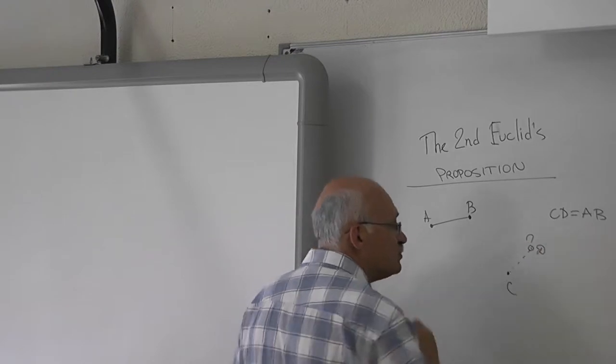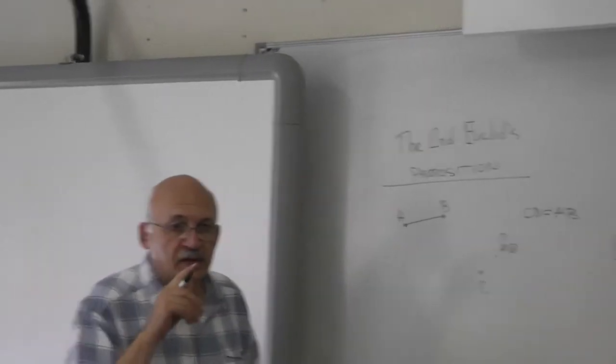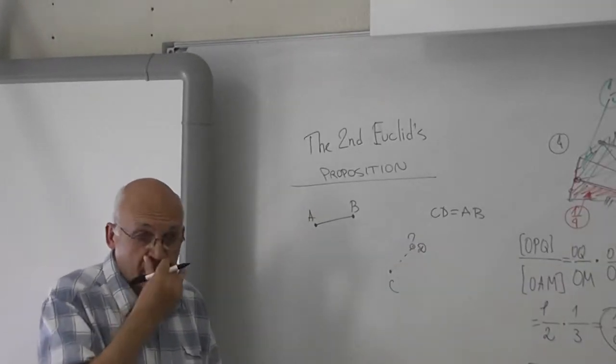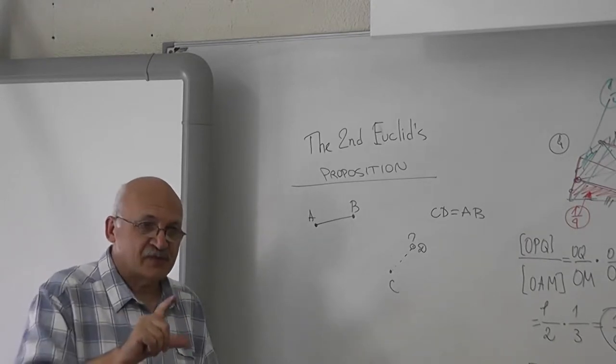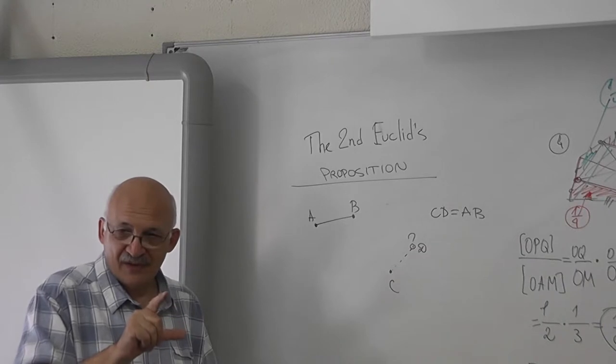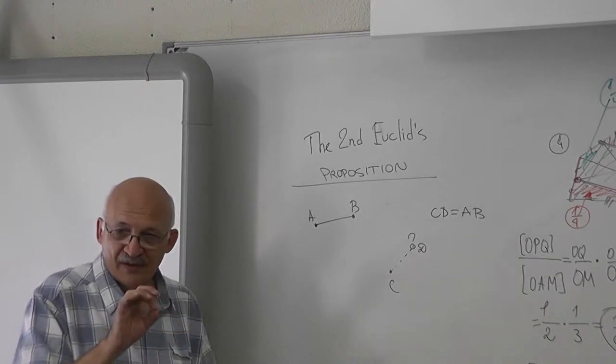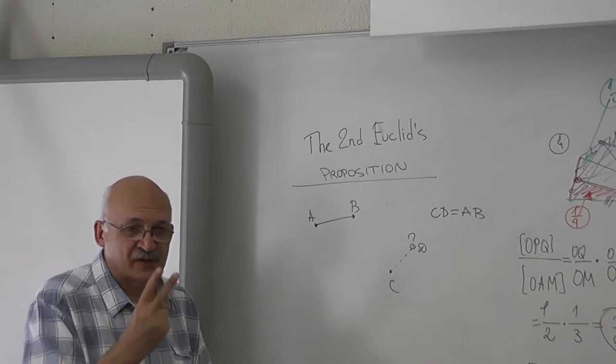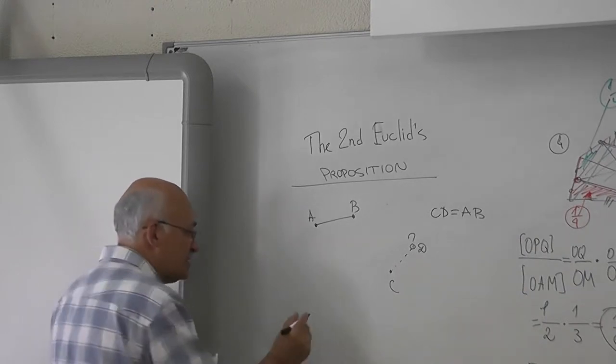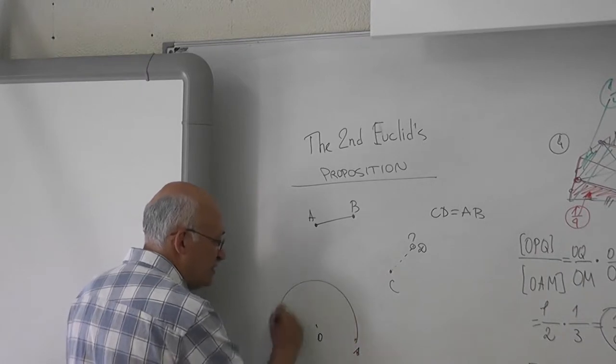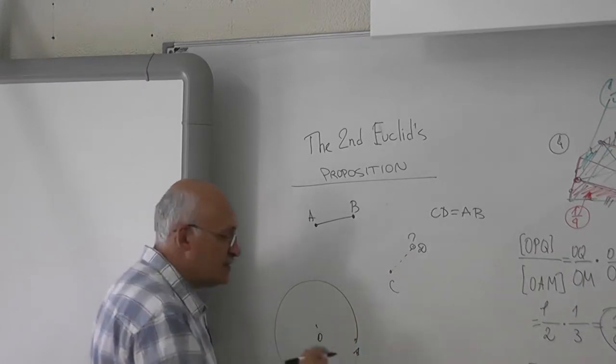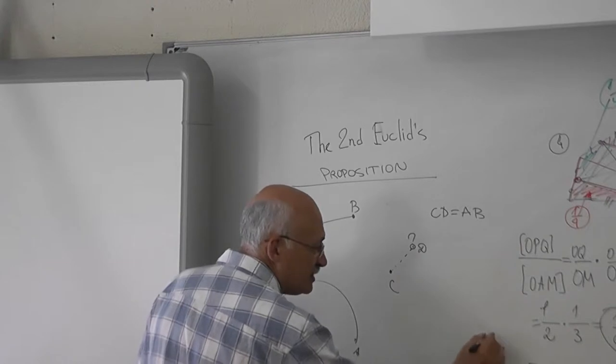How do you find this point D? We can use the compass, but we cannot use the compass which measures. Only the circle tool. You remember? In the problem you have two circles. One circle: you have a center, you have a point, then you draw a circle.